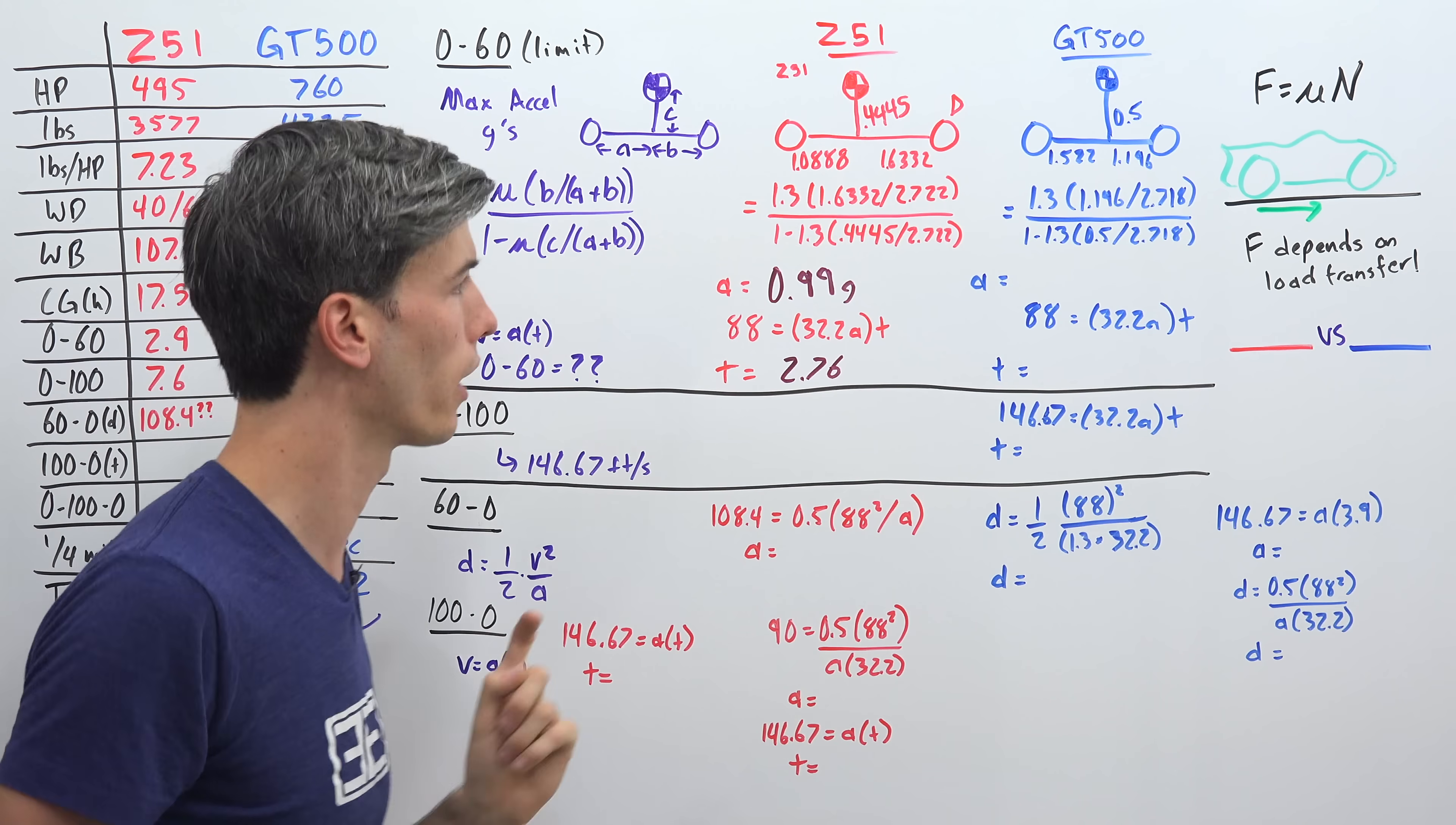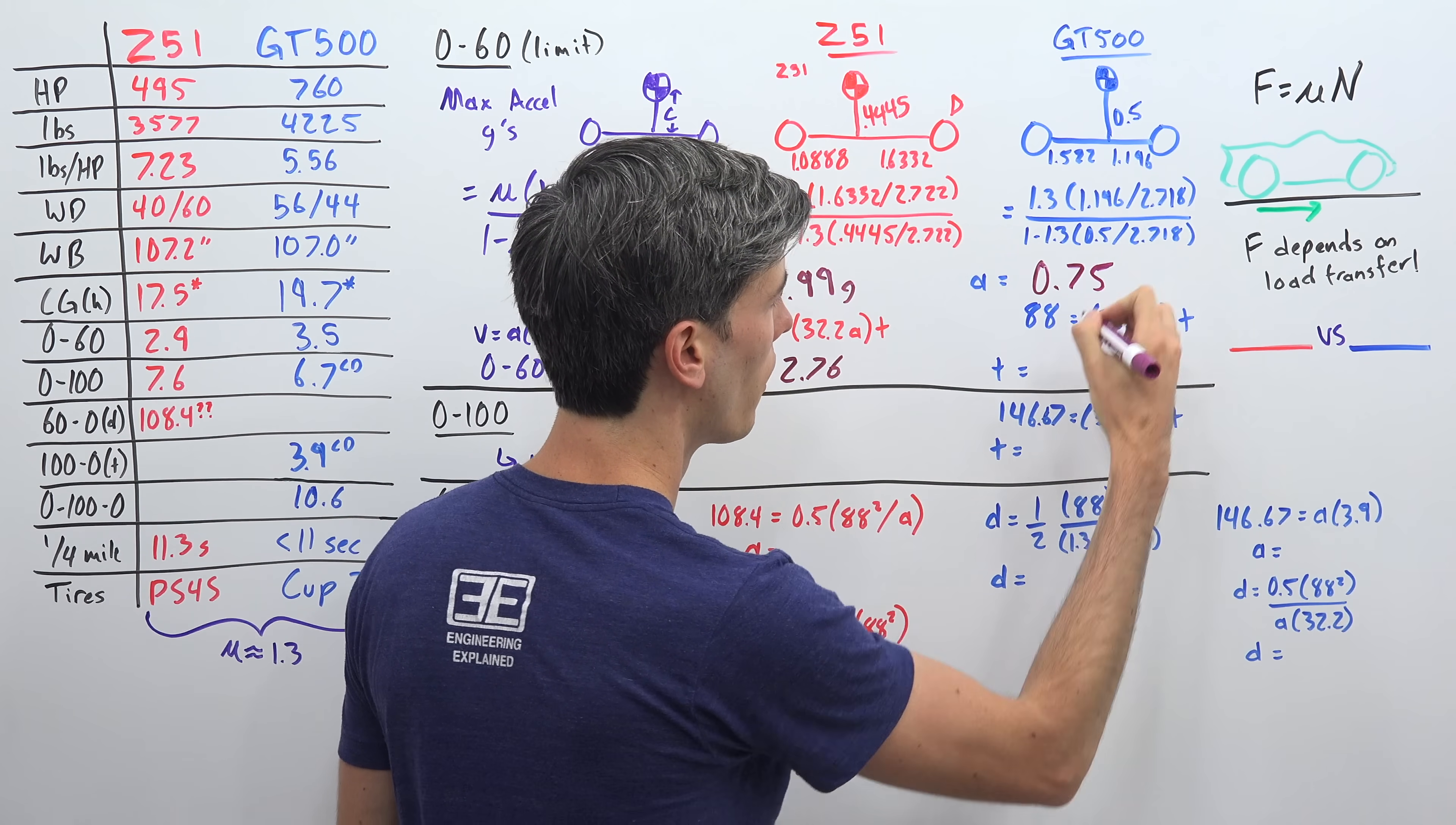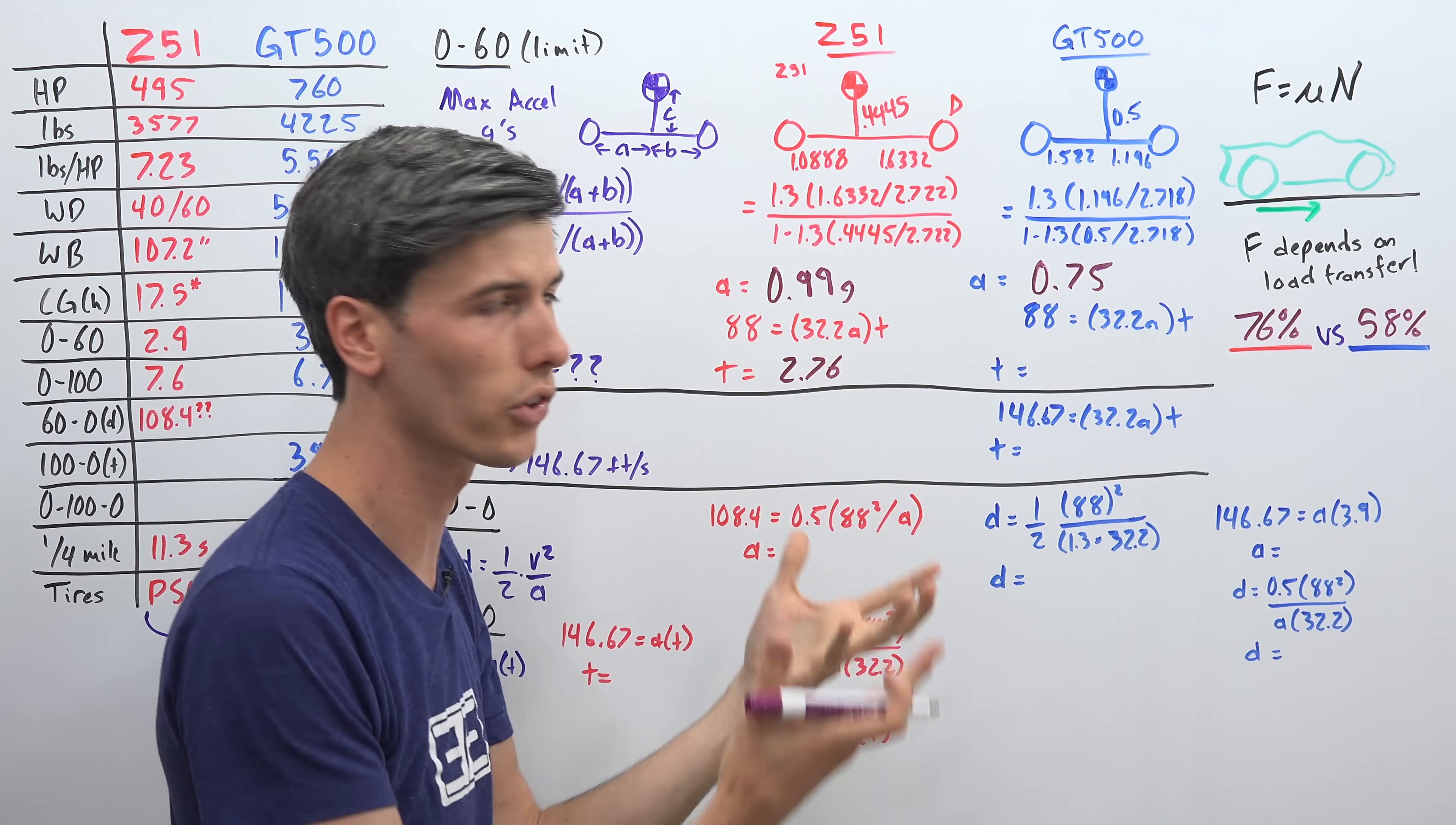Now for the GT500, we do the same thing. Now remember, so this weight is closer to the front of the vehicle, so less of it to transfer to that rear, though the center of gravity is slightly higher. We don't know what that center of gravity is, but we're just assuming very similar to the GT350. It could be a little bit higher. And so we do the math for that and we get a maximum peak acceleration of 0.75 g. And so, you know, what's happening right here? Well, the difference is the Corvette is able to put 76% of its weight of the load on those rear tires under a hard launch. Versus this GT500 is only able to put 58% of the weight on those rear tires. And so as a result, its peak acceleration is limited because of how much load transfer it has.